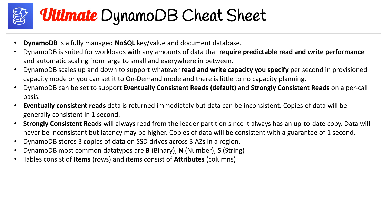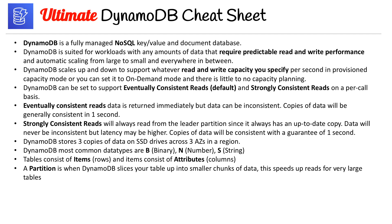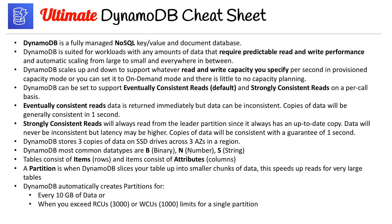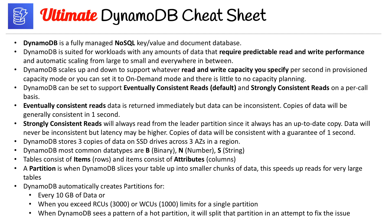Tables consist of items, which we call rows, and items consist of attributes, which we call columns. A partition is when DynamoDB slices your table into smaller chunks of data — this speeds up reads for very large tables. DynamoDB automatically creates partitions every 10 gigabytes of data, when you exceed RCUs of 3,000 or WCUs of 1,000 limits for a single partition, or when DynamoDB sees a pattern of a hot partition and splits it to fix the issue.